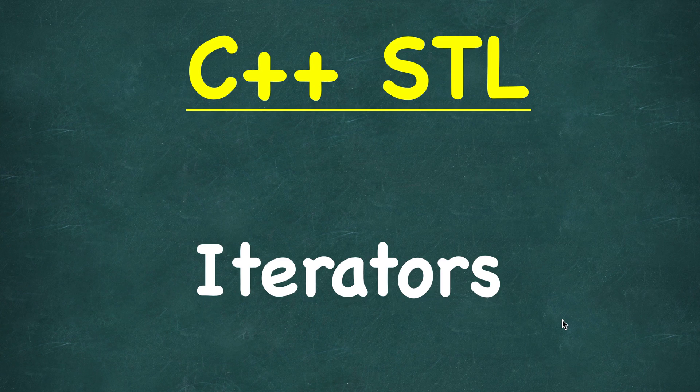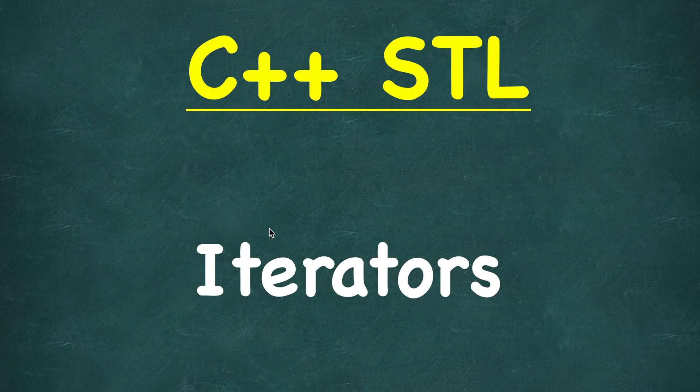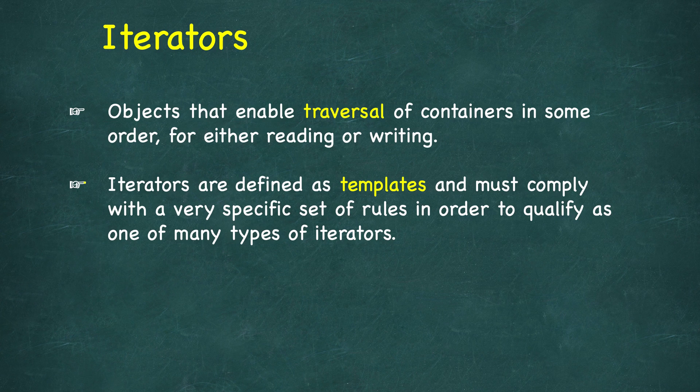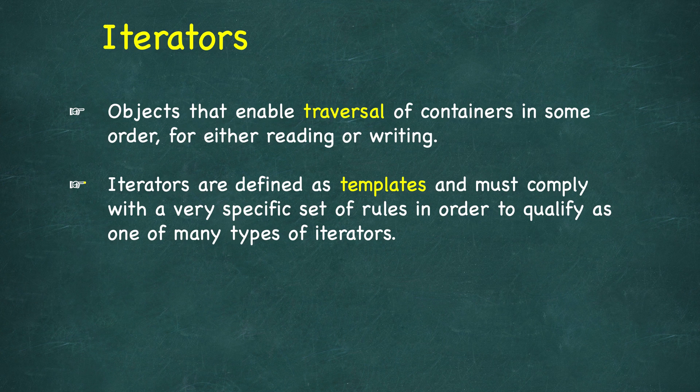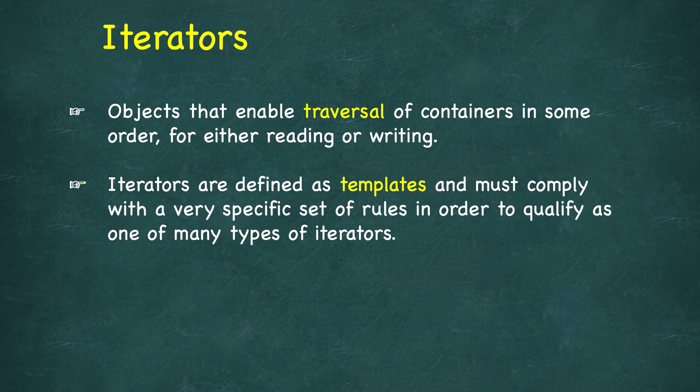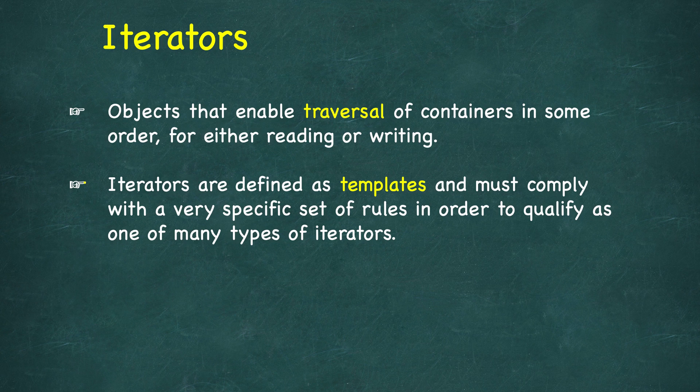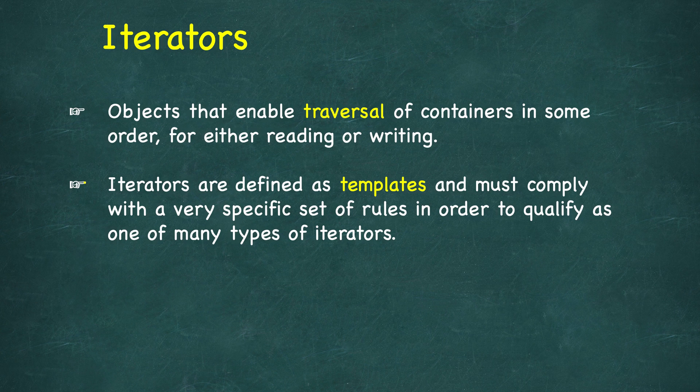In this lesson we will study iterators, which are a very important component of C++ STL. Iterators are objects that enable us to traverse containers in some order for either reading or writing. Iterators are defined as templates in C++ and must comply with a very specific set of rules to qualify as one of many types of iterators. We will look at all the different types and what rules are required for them to be qualified as that type.